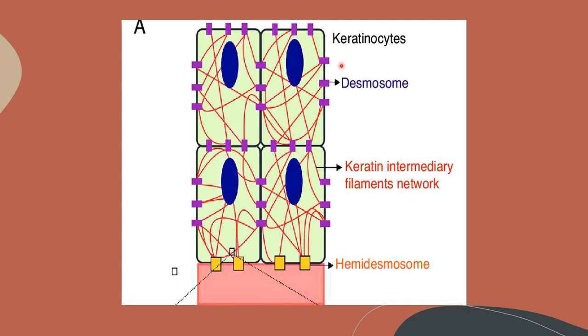In the skin cells, known as keratinocytes, the intermediate filaments are formed by keratin subunits. These keratin intermediate filaments form a tough resilient structure which prevents excessive stretching of the skin,